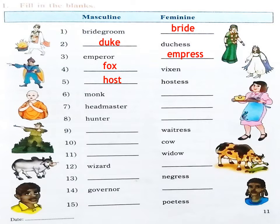Number seven: feminine noun form. Headmaster — Yes, Raza. Headmistress. Very good.